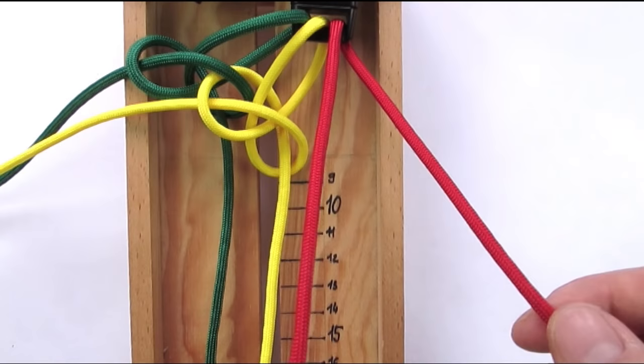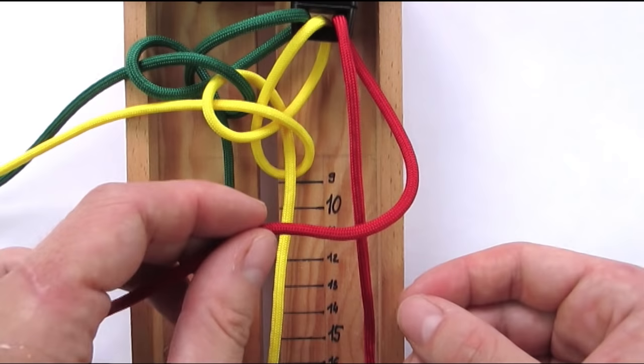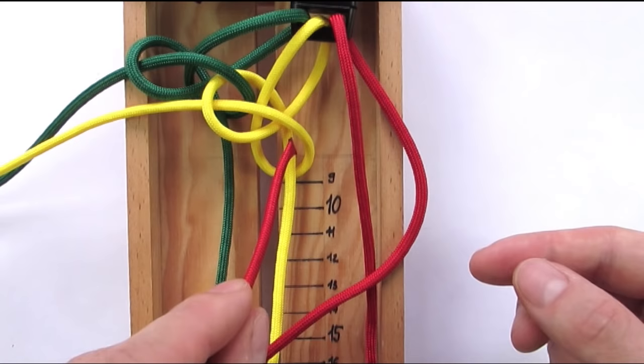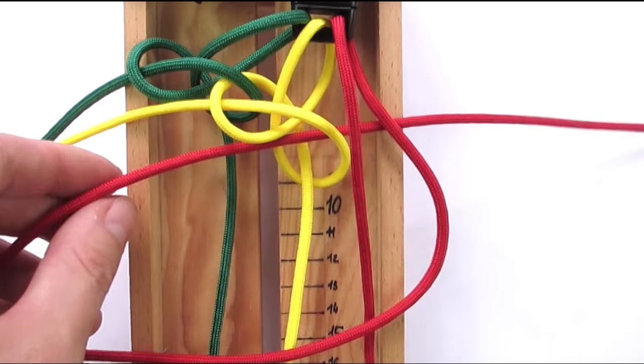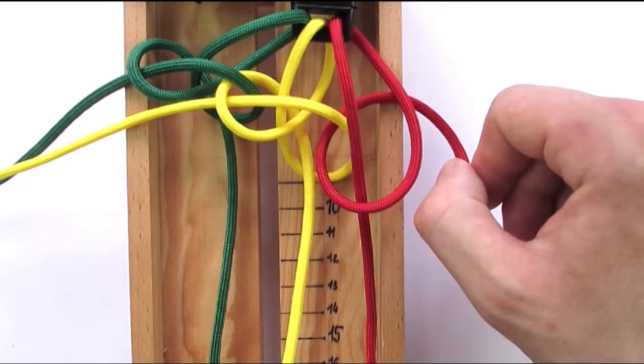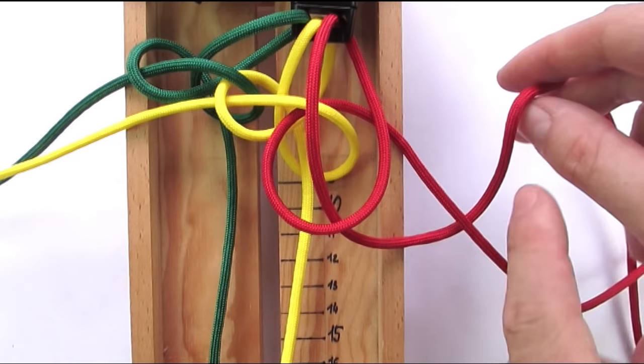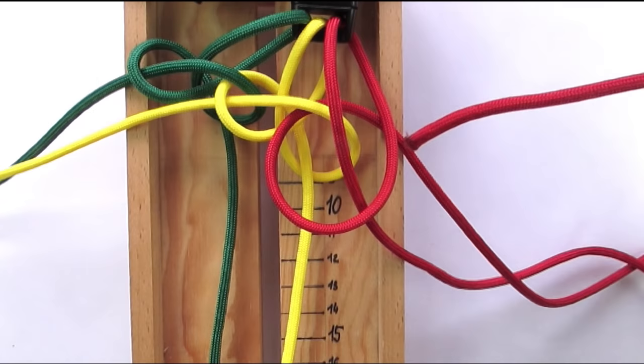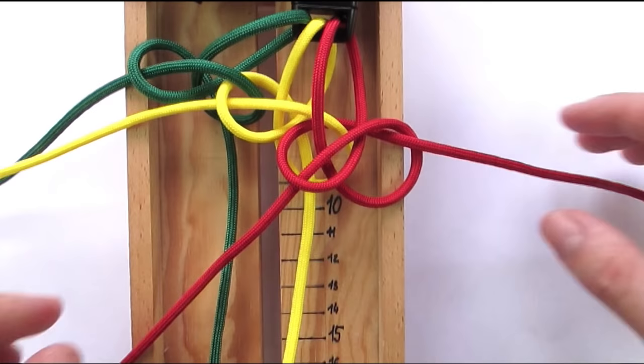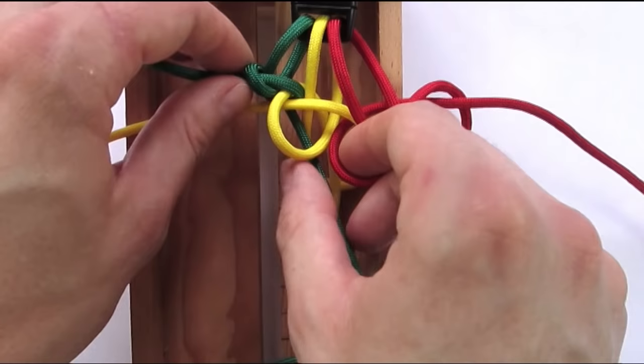Again our right end will be going under the buckle. We're going to place it over the left end, then through the loop of the second knot, then under everything. With our left end we're going to go under the right end, then over everything, and into the loop on the left. With this we have done three snake knots, which basically constitute one row. And now we tighten them.